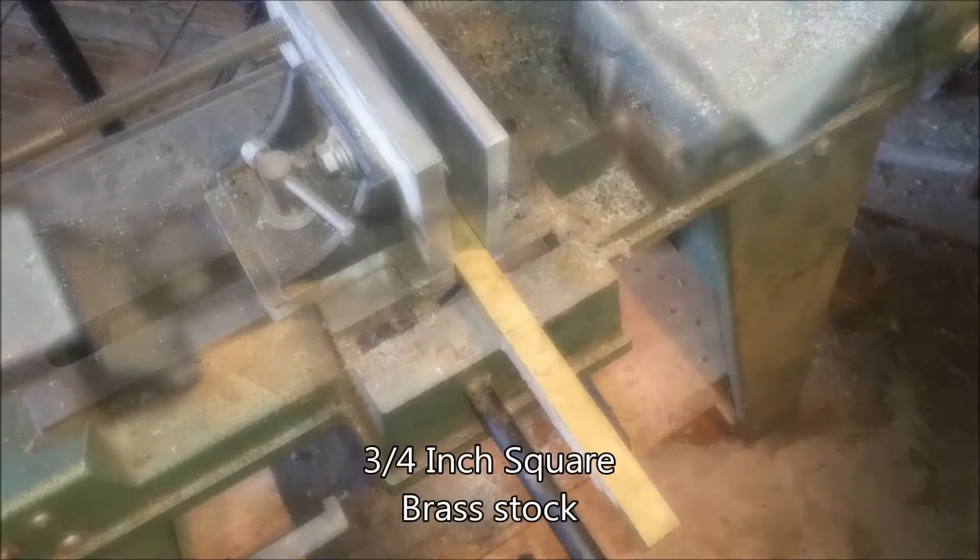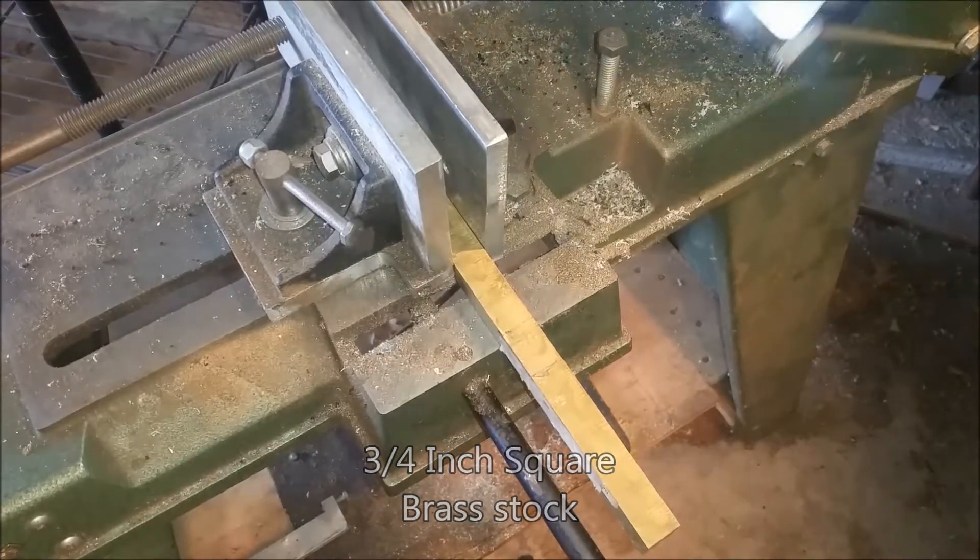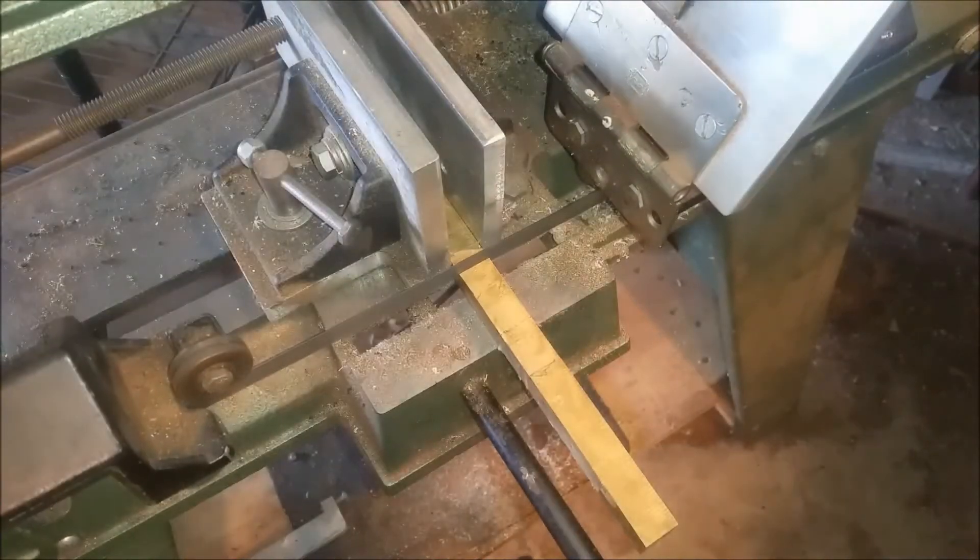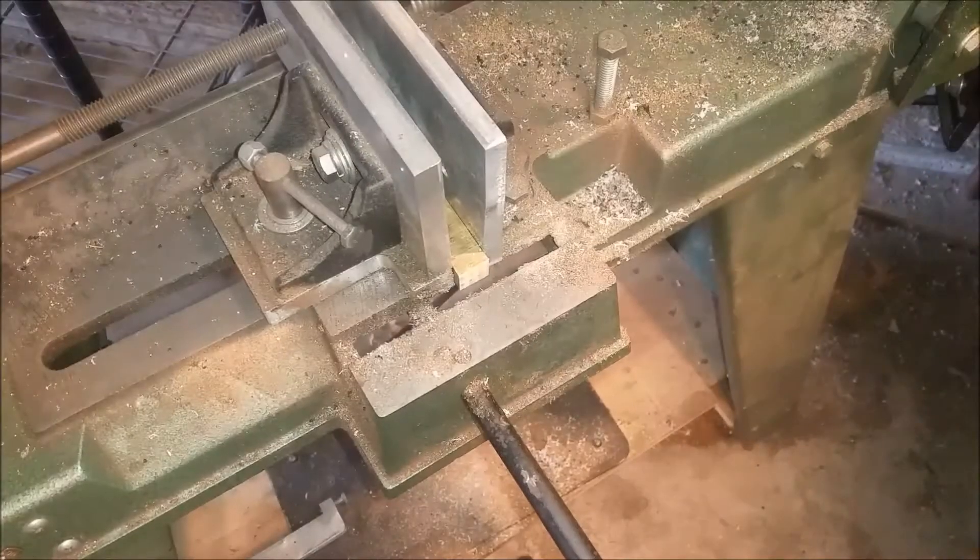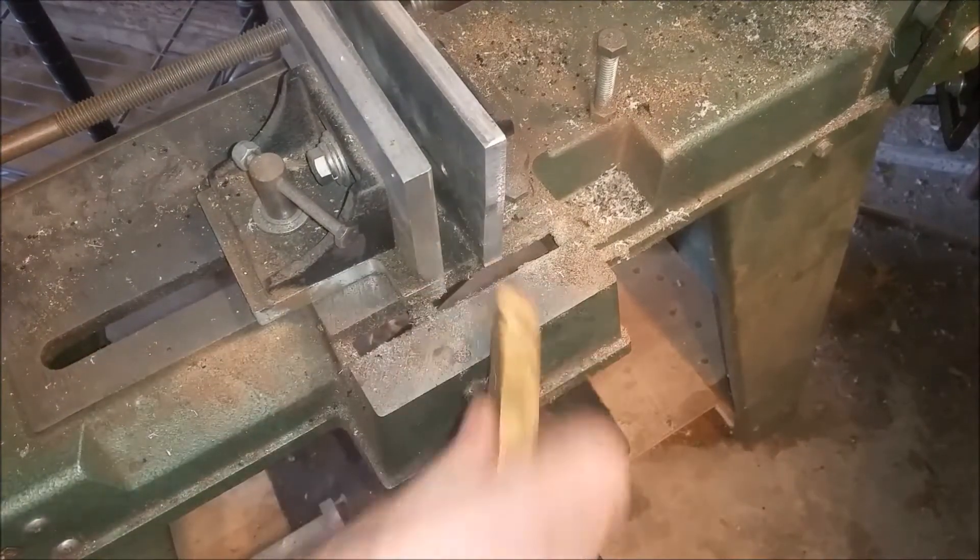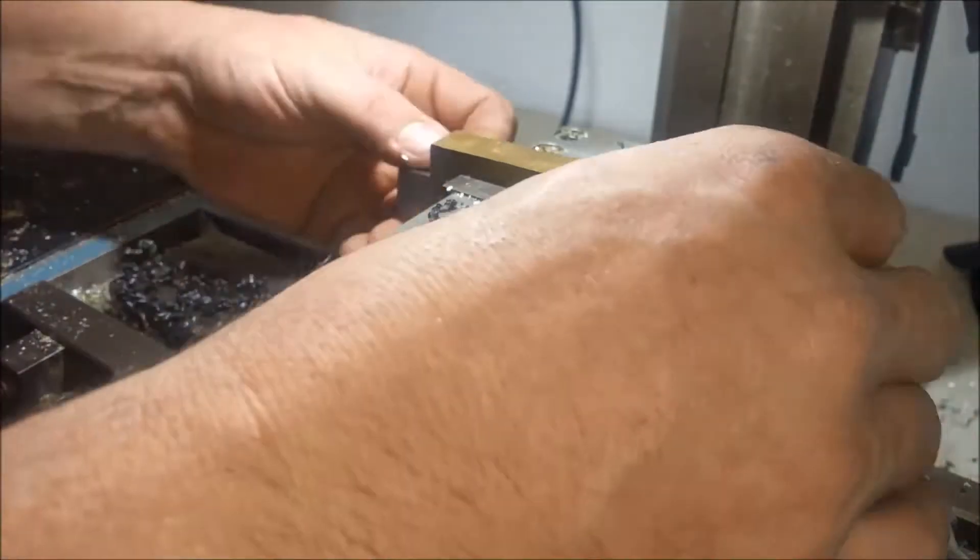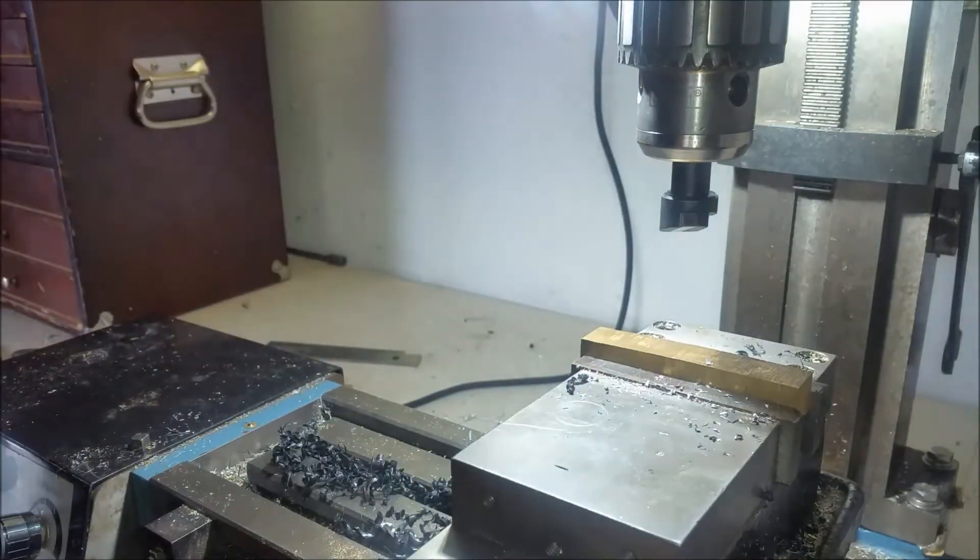I am going to start by cutting this 3/4 inch square brass stock at 3 and a third inches long. You can see that one side of this piece of brass is way out of true, so let's go ahead and straighten it out.